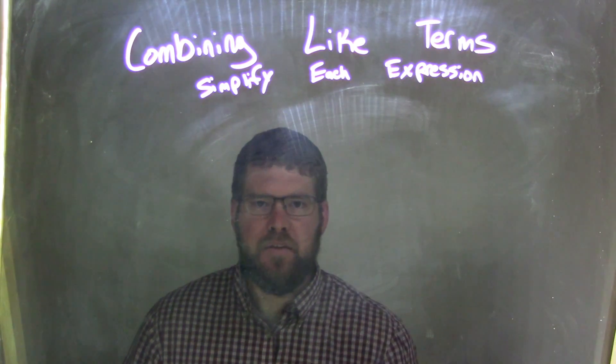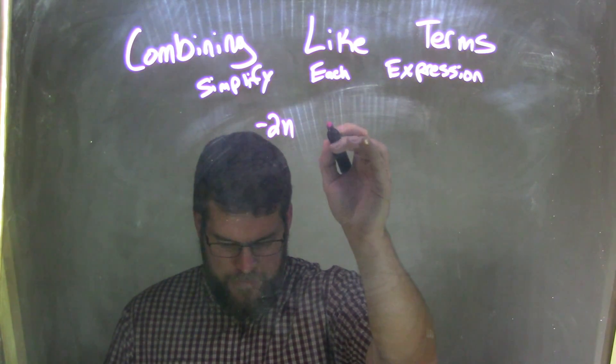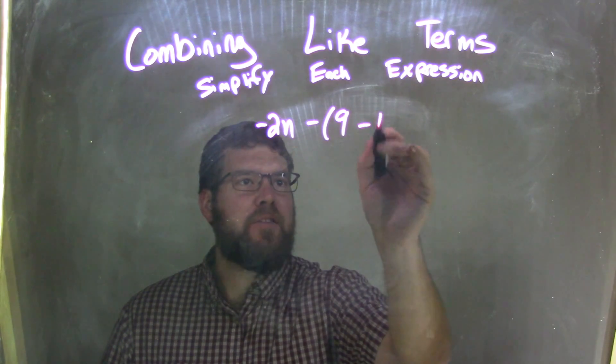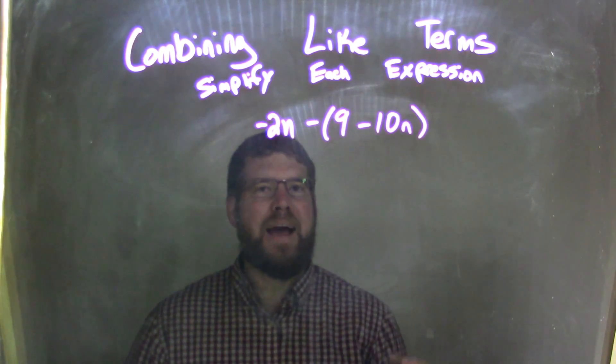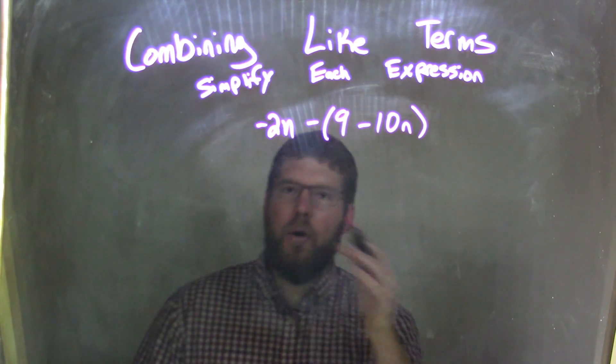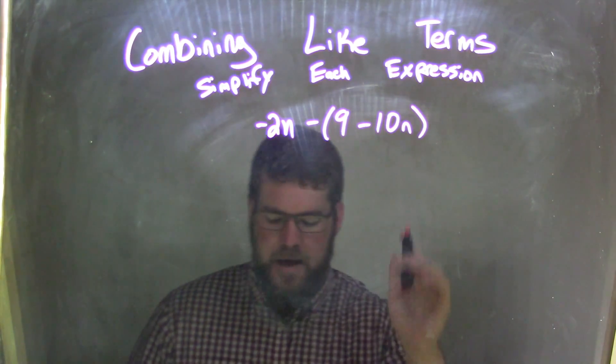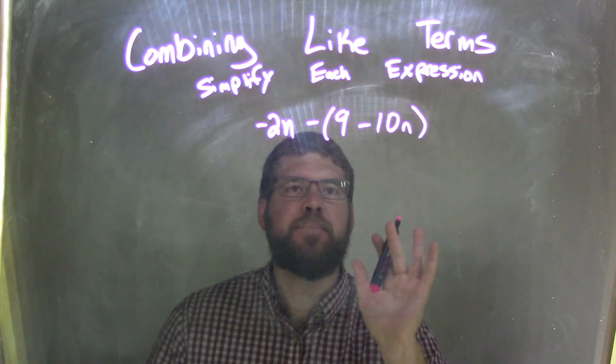If I was given this expression, negative 2n minus 9 minus 10n, this one I know is going to be tricky right from the get-go. That's subtraction, and then the whole parenthesis. Inside the parenthesis, we have 9 minus 10n. And they're not like terms, so we cannot combine them.